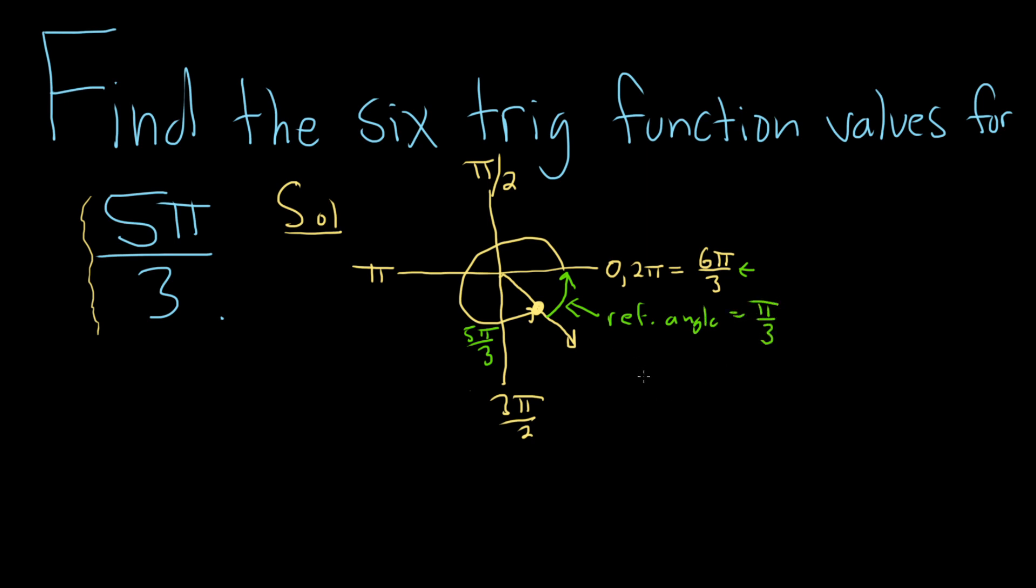So once you figure this out, the problem isn't too bad. Step 1, you identify where it is and you find the reference angle. Now what we do is we find the trig function values for the reference angle. Once we do that, we can come back and think about where we are in the unit circle and figure out the signs, and then we'll finish up. So let's focus on π/3 now.